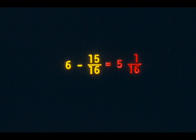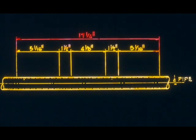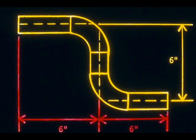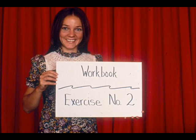Measure five and one-sixteenths and make your final mark — this is where you will cut the tubing. The total length of your tubing is five and one-sixteenths plus one and a half plus four and one-eighth plus one and a half plus five and one-sixteenths, totaling seventeen and a quarter inches. Remember the rule: end to center of bend minus take-up. If a leg has a bend on each end, subtract the take-up twice. Always be sure to add the amount of tubing needed for the bend. Complete exercise number two in your workbook.